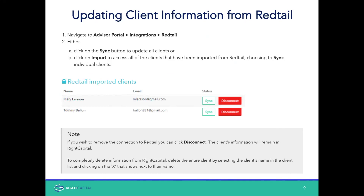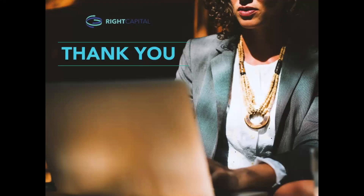One thing to note: if you wish to remove the connection to Redtail, you can just click Disconnect. The client's information will remain in Wright Capital. To completely delete information from Wright Capital, you're going to delete the entire client by selecting the client's name in the client list and clicking the X that shows next to their name. Please do not click that if you do not want to remove their information from the system. It's really that simple — very quick, very easy. We also have a great help section at help.rightcapital.com. You can just type in Redtail and we'll have step-by-step instructions there for you. You can also chat in to one of our support specialists.